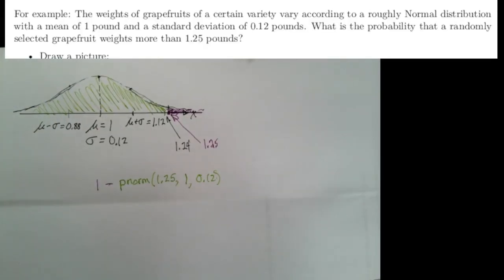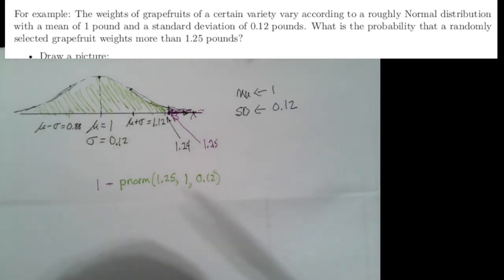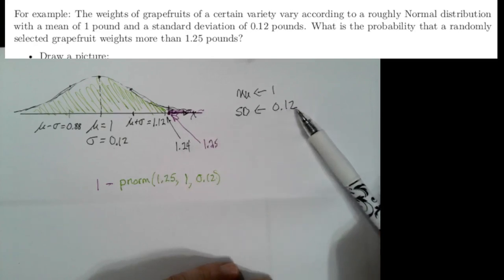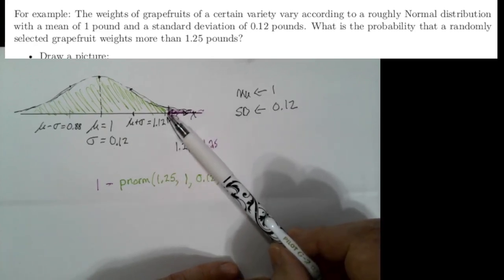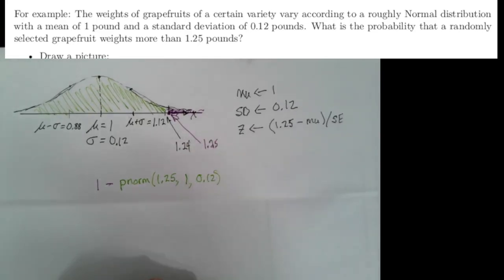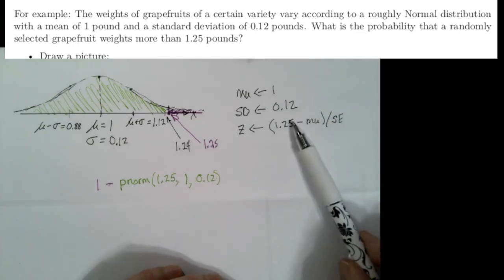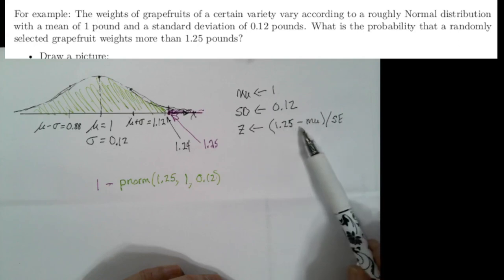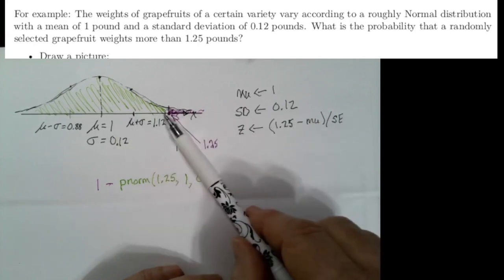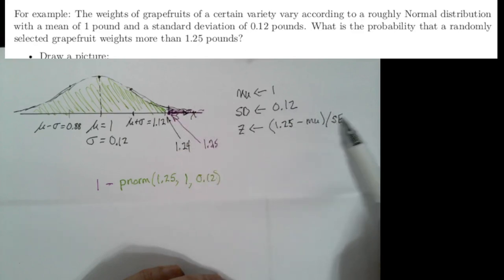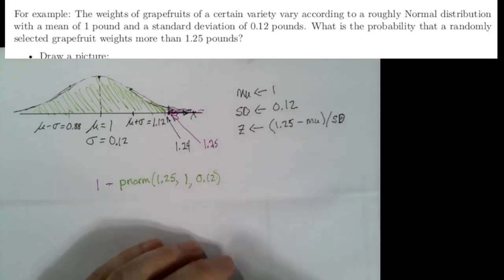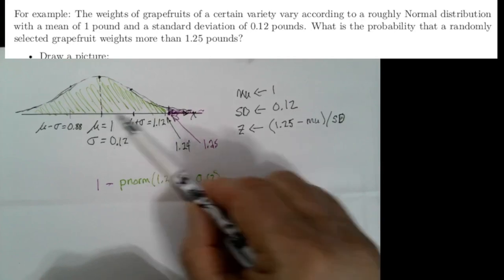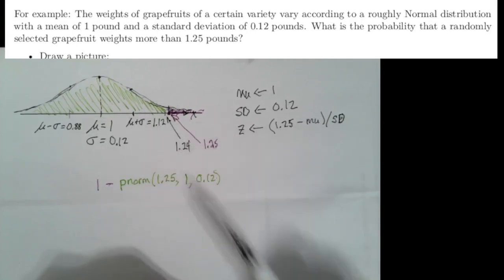Now we're going to solve the problem a second way. The mean is 1 and the standard deviation is 0.12. We can find the Z-score for 1.25. The Z-score is just how many standard deviations you are away from the mean: Z = (1.25 - μ) / σ. That tells me how far I am — in this case a positive amount, more than two standard deviations above the mean. So that's telling me how many standard deviations this number is away from the mean. We can see in the picture it's more than two standard deviations away.